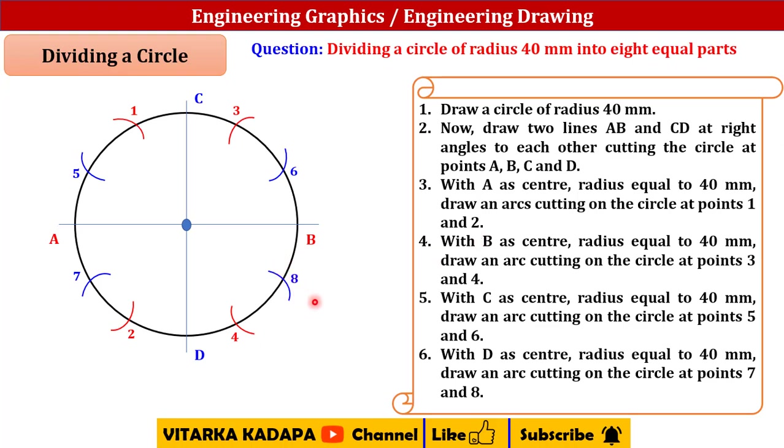Now if you try to measure, the circle has been equally divided into eight equal parts. If I draw a line from this center point to 6, center point to 3, center point to 1, center point to 5, now the circle has been equally divided at 45 degrees each, and this is the procedure of dividing a circle into equal parts.